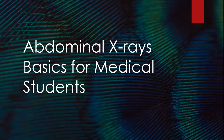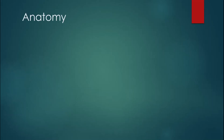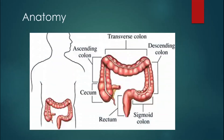First, you want to understand the anatomy when interpreting an abdominal X-ray. Here we have a diagram of the large bowel. You have the cecum, then the ascending colon, then the transverse colon, then the descending colon, the sigmoid colon, and finally the rectum. This is very important when writing your report in exams or during hospital placements.